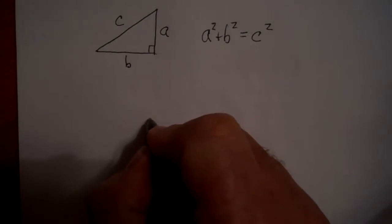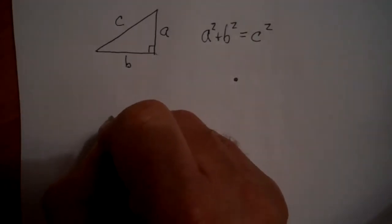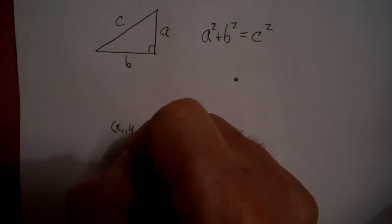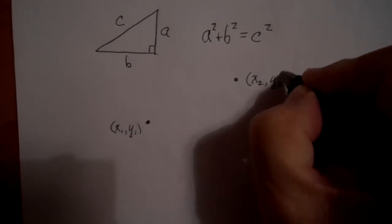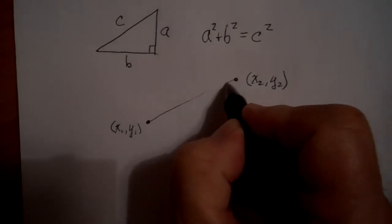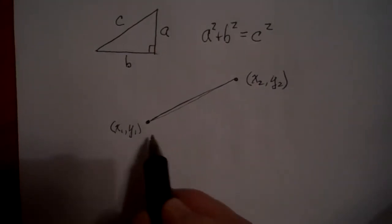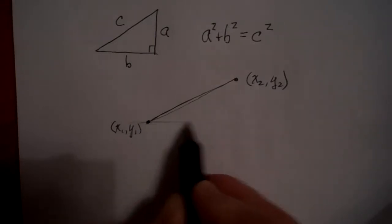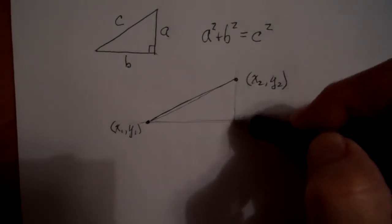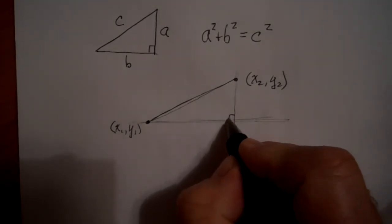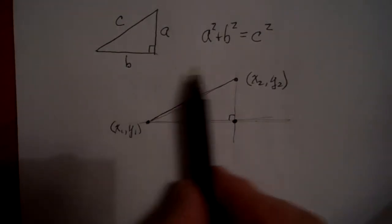Here's the first application. Suppose that we have two points in the Cartesian coordinate plane — one of them is (x₁, y₁) and the other one is (x₂, y₂) — and we look at the line segment between those two points. There's a triangle here that we might not be seeing. If you take a line parallel to the x-axis and another line parallel to the y-axis, there's going to be a right angle right there.